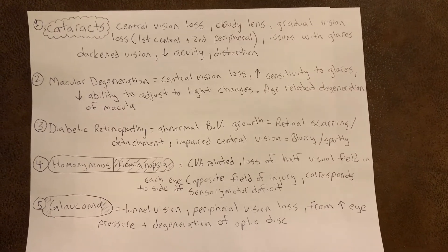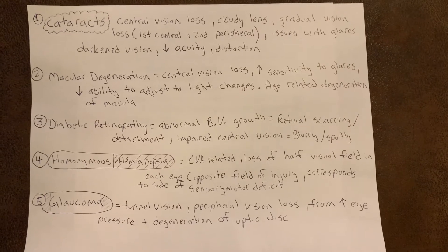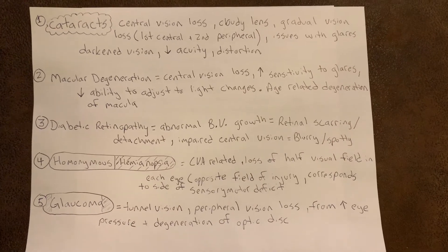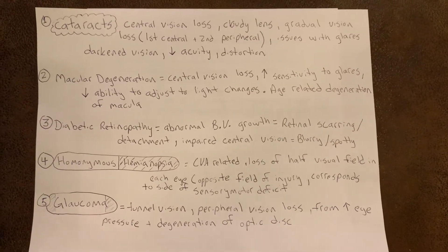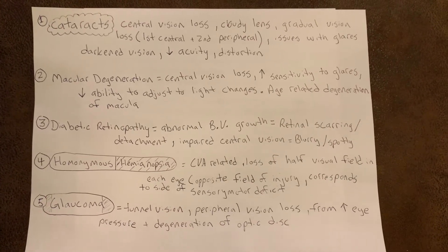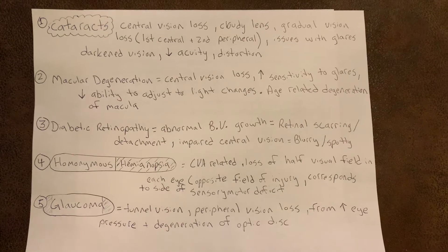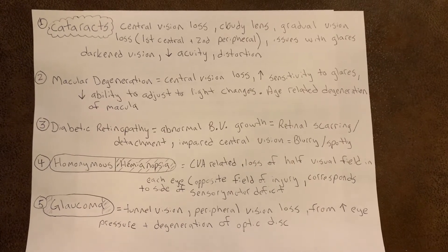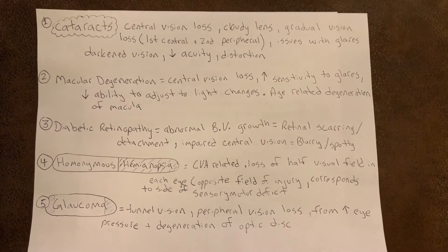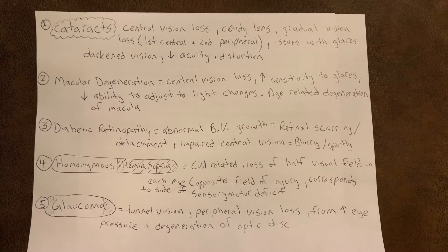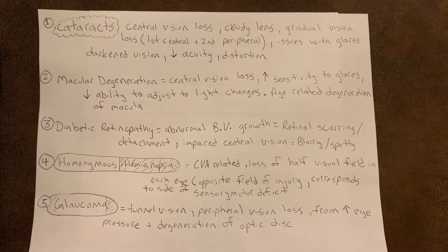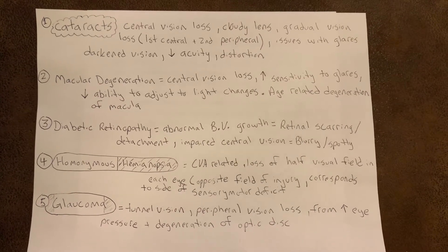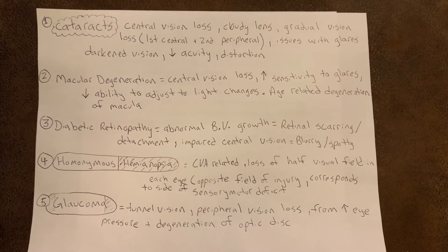The second type of vision loss is macular degeneration, which is a central vision loss with an increase in sensitivity to glares and a decreased ability to adjust to light changes. It is an age-related degeneration of the macula.